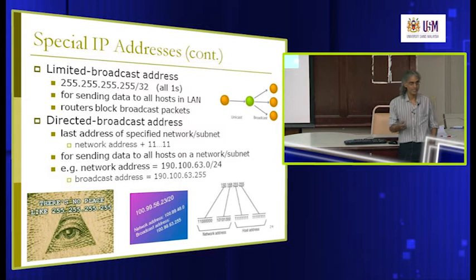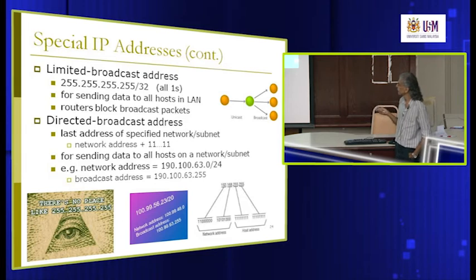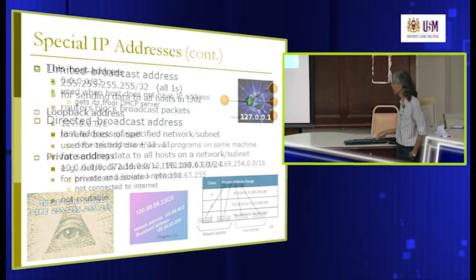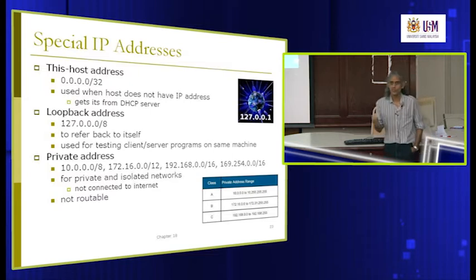All-ones is called limited broadcast — for all hosts on the LAN. The other type we saw earlier is directed broadcast, which is for a specific network or subnetwork. In summary, special IP addresses include: network address, broadcast address (all ones), all zeros, addresses starting with 127, and private address ranges — all of these are normally not assigned to machines connecting to the internet.